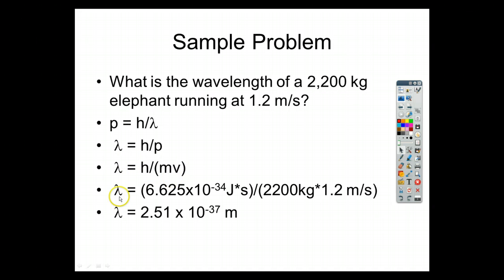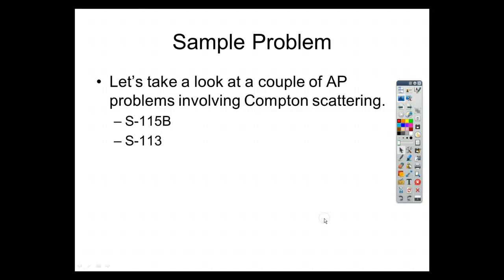The wavelength, then, is equal to h. Remember, it's 6.625 times 10 to the negative 34. We just divide that by the mass times the velocity, and you end up with a wavelength of 2.51 times 10 to the negative 37 meters.